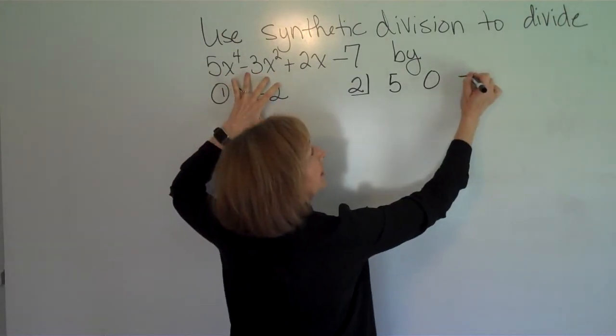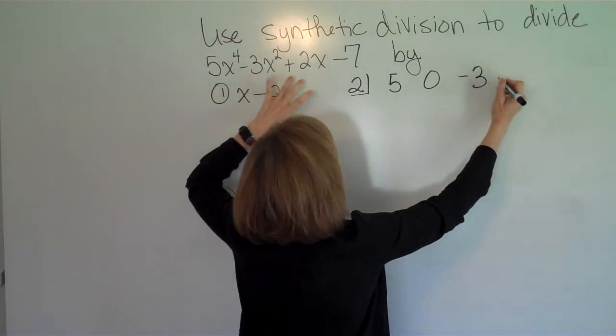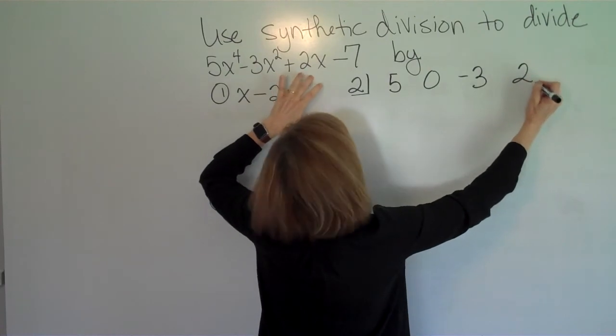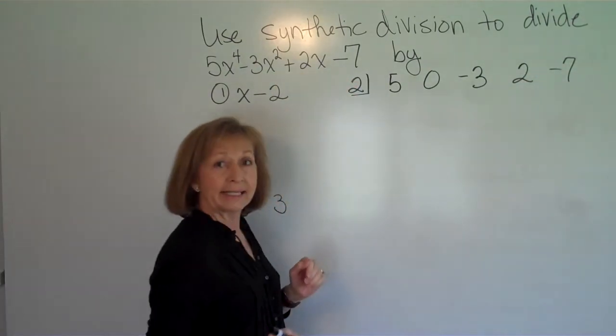And then a coefficient of -3 in front of my x^2, a 2 in front of my x, and a -7 as my constant term.